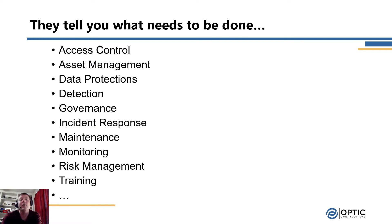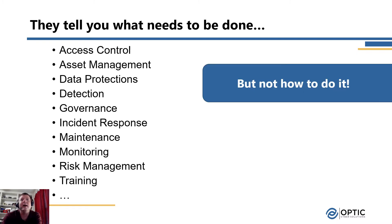From various standards and regulations, we're told we need things like access controls and asset management, but we're not told how to manage our assets. In many cases they don't even tell us what assets we need to manage — they leave it up to the organization. That flexibility is great for determining what's appropriate for your organization, but if you're not sure what's appropriate or how to implement asset management, it can feel like a black box.